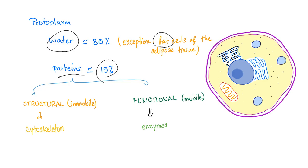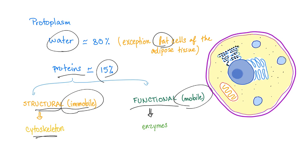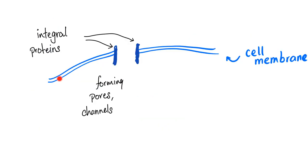Proteins make up around 15%. We have two types of protein: structural proteins, which are immobile, and functional proteins, which are mobile. Structural, such as the cytoskeleton; and functional, such as your enzymes. If this is the cell membrane, there are integral proteins spanning the entire length of the cell membrane. These integral proteins provide entrance, forming pores and channels for molecules to pass through.